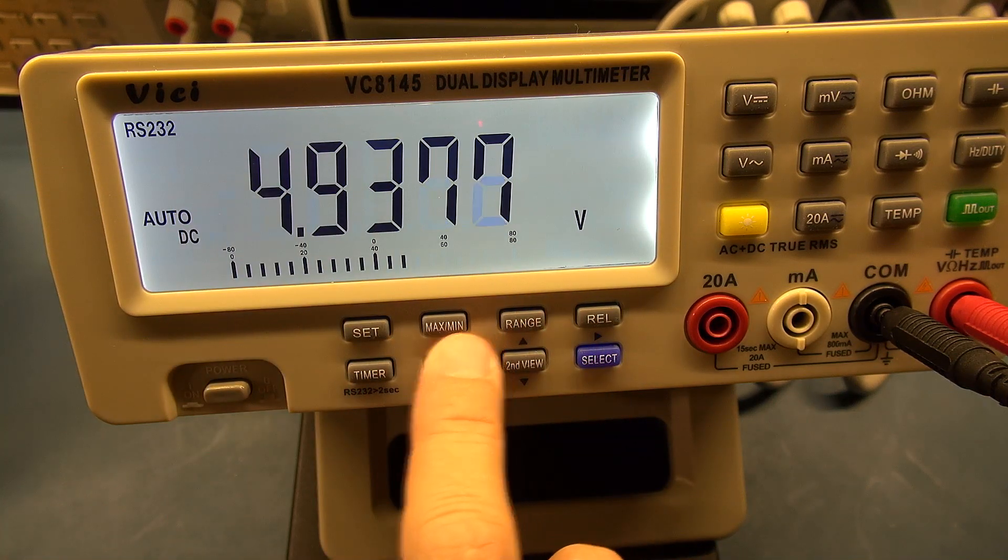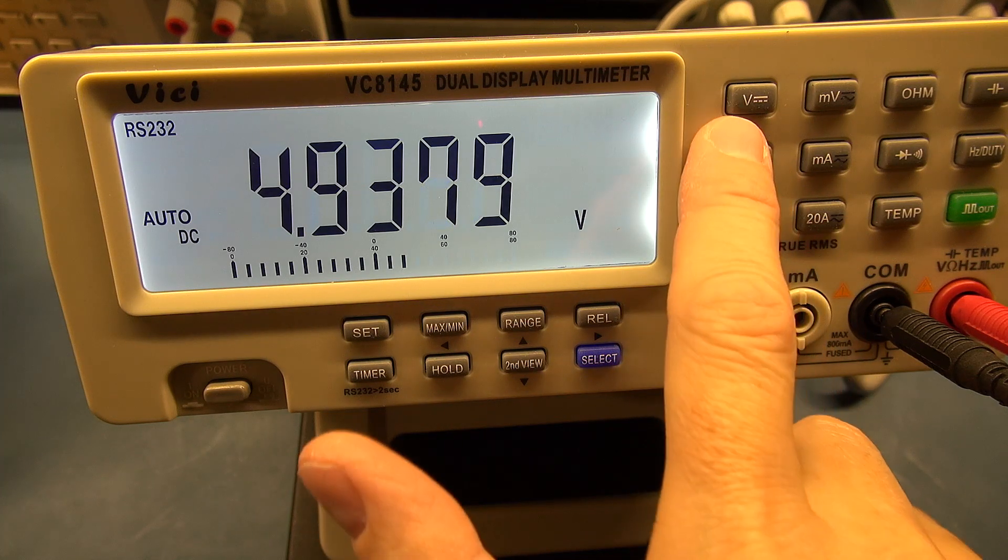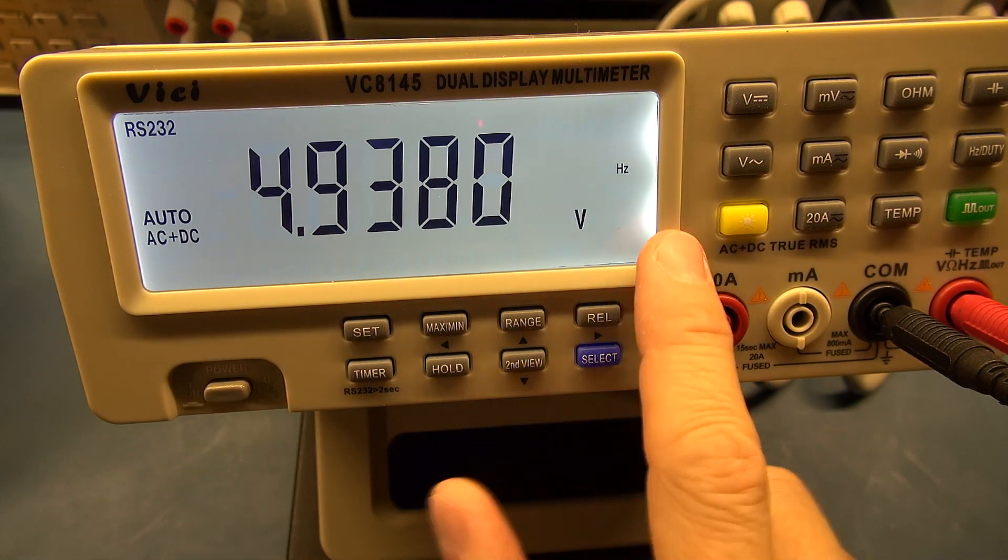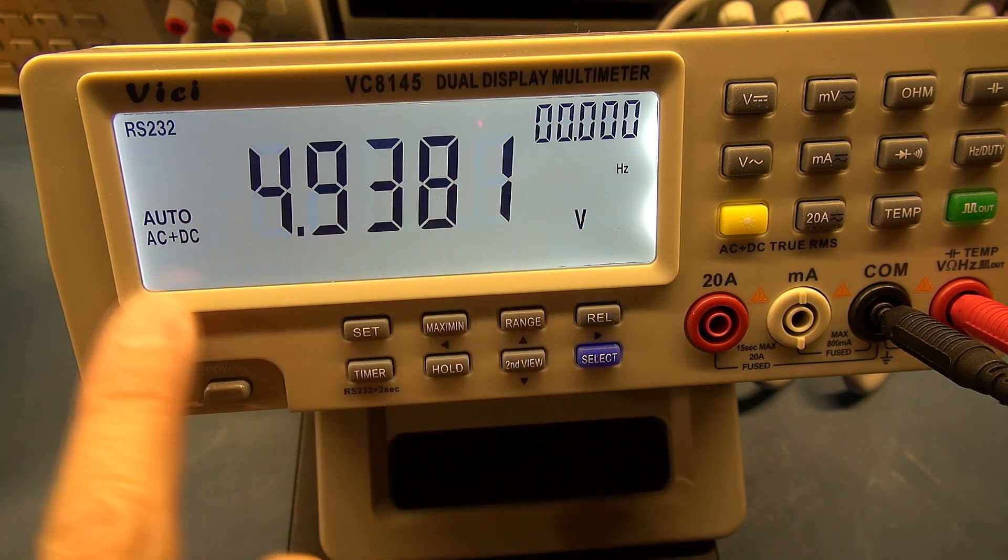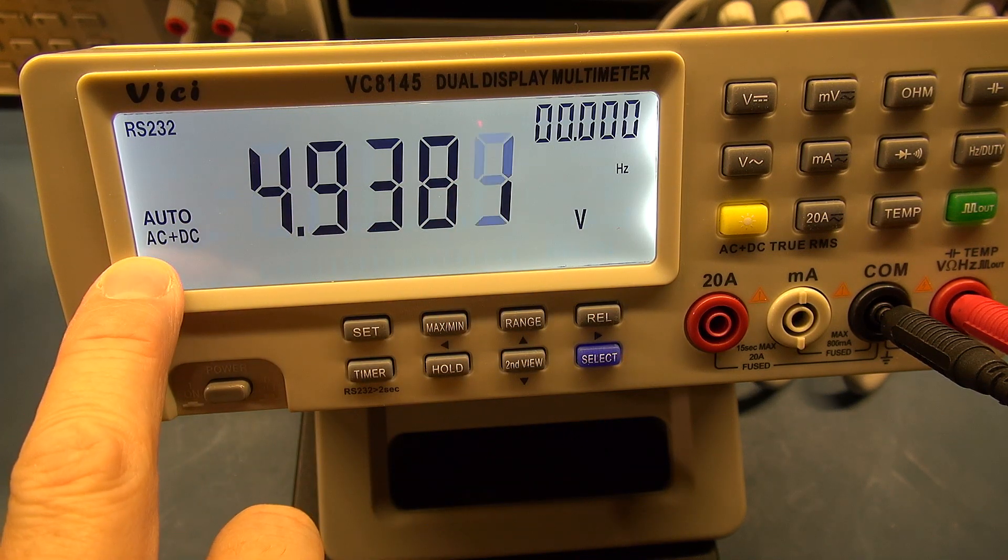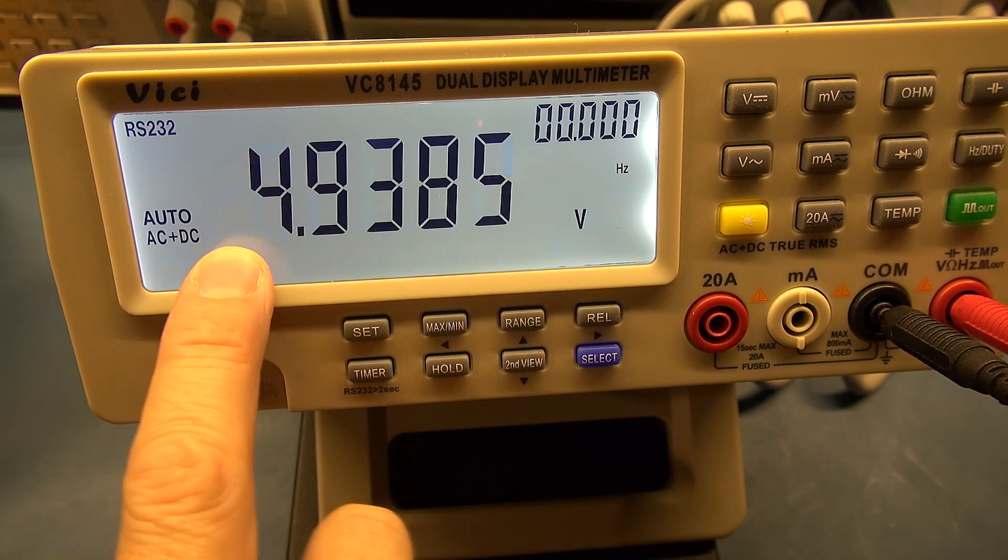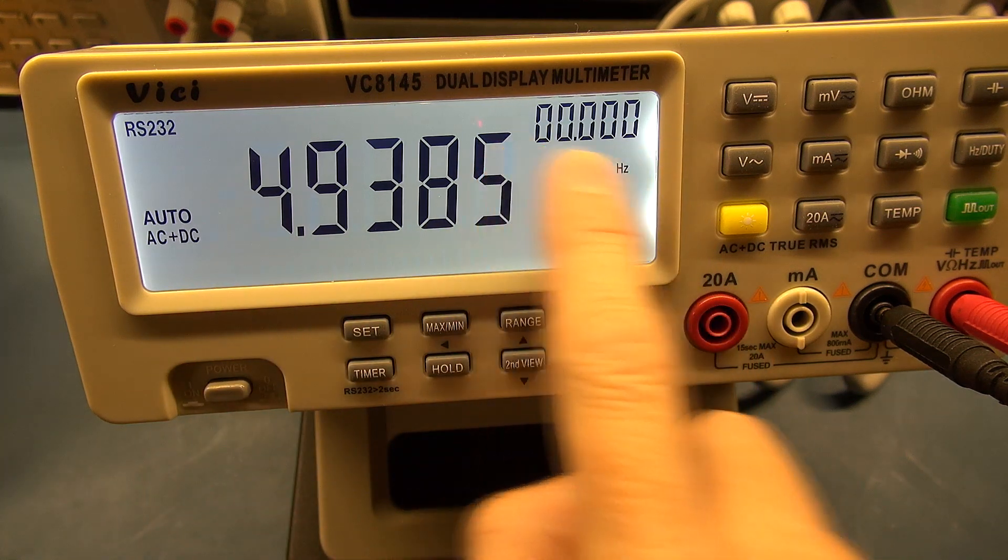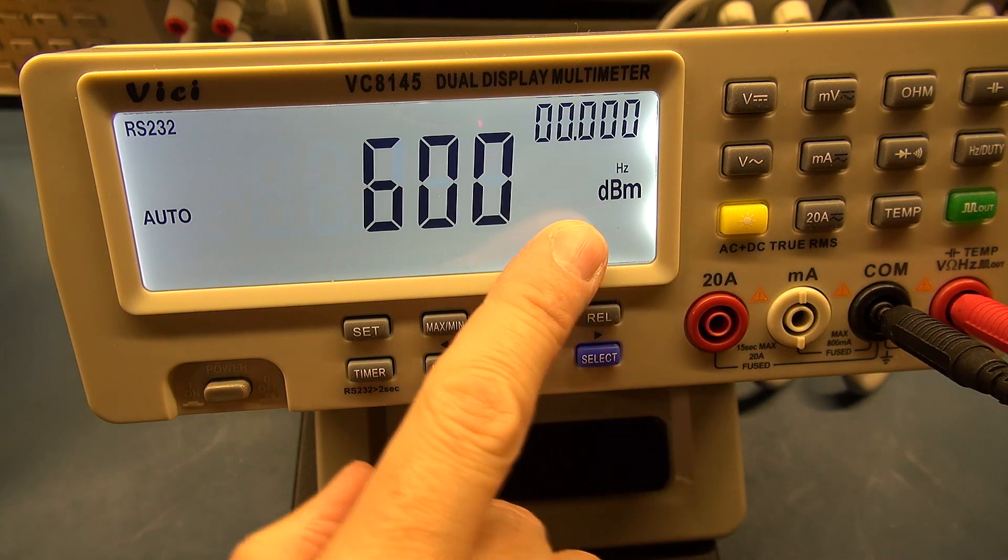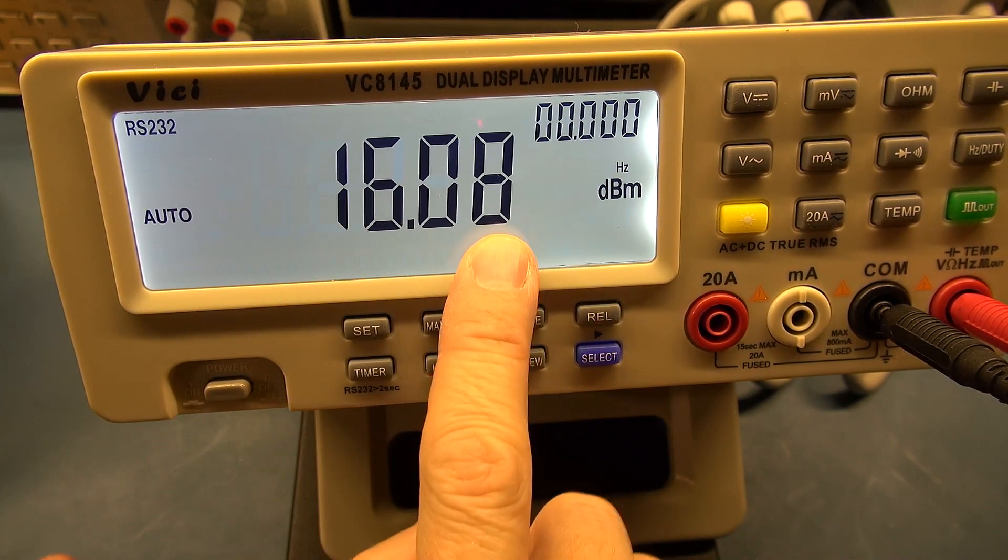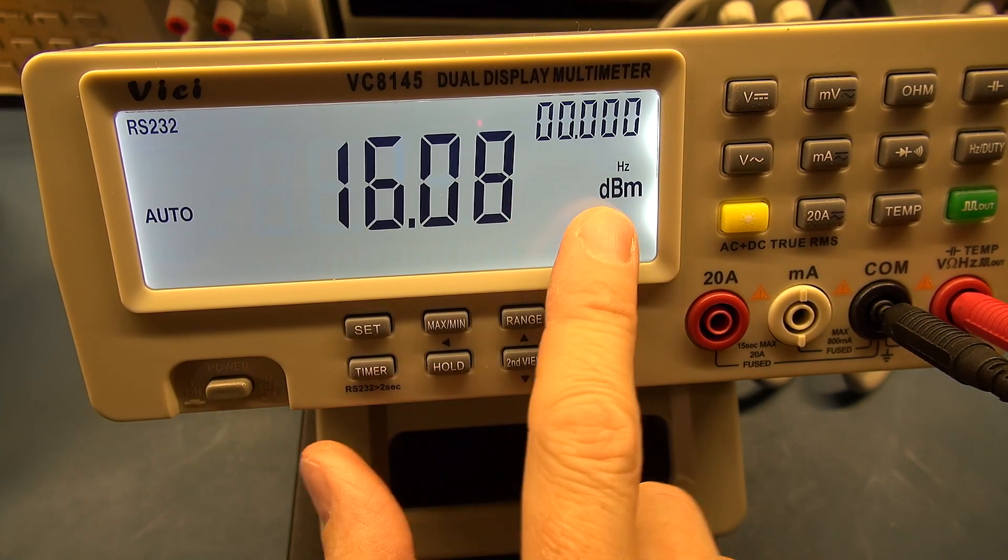Before we move on to the next function, let me show you something about the select and other functions. Let's say on DC voltage, if we push that, you'll see one of the settings is AC plus DC. So that enables you to measure an AC voltage with a DC offset, let's say for instance ripple on a DC power supply. And you can see here it's showing Hertz in the secondary display. If we go select, this is a measurement and this will disappear.